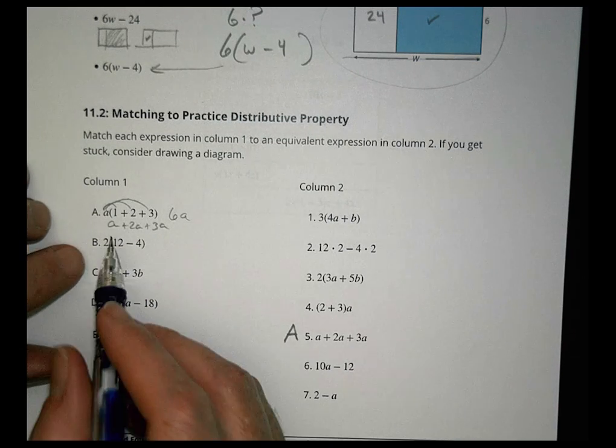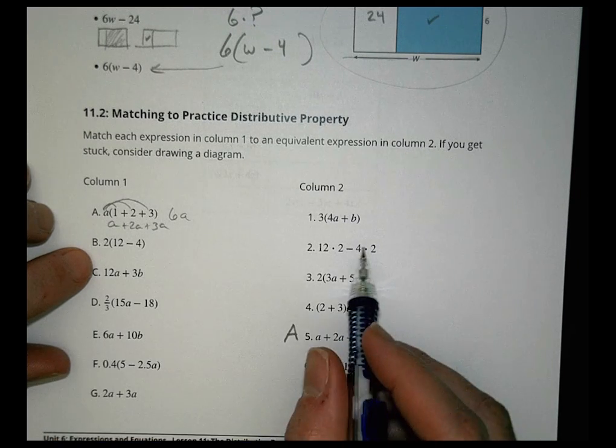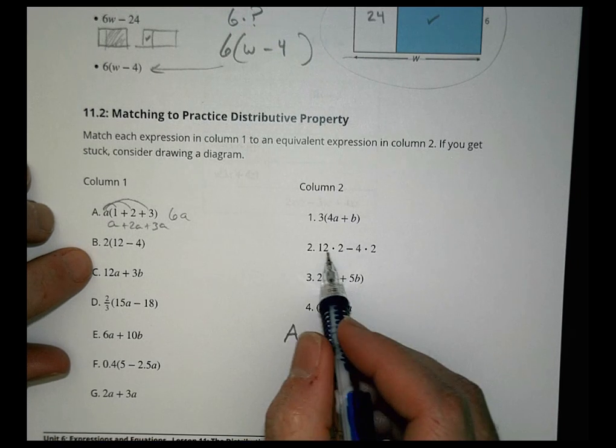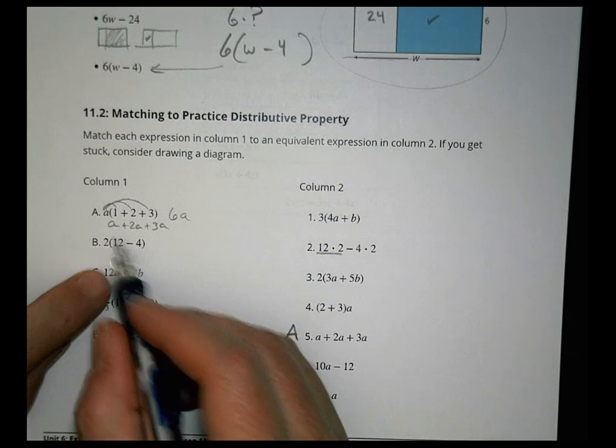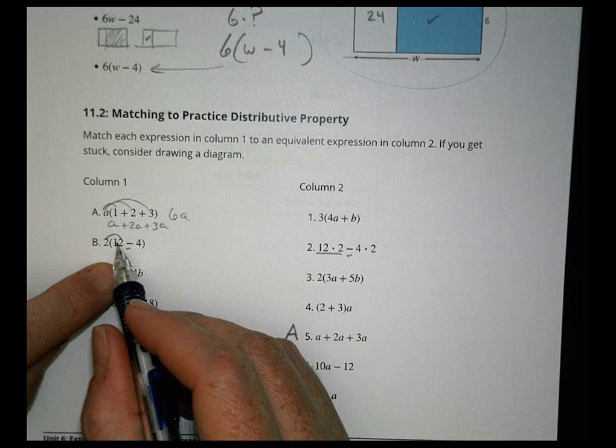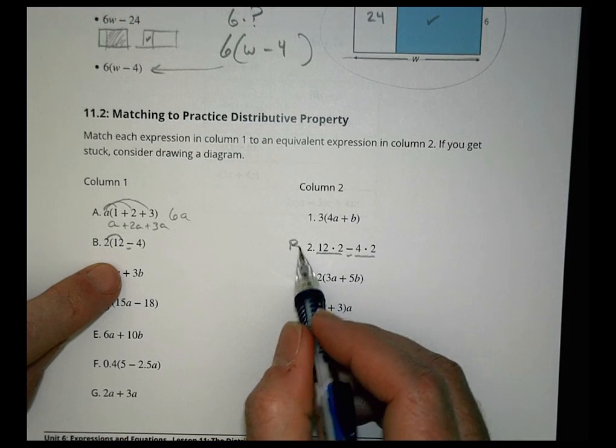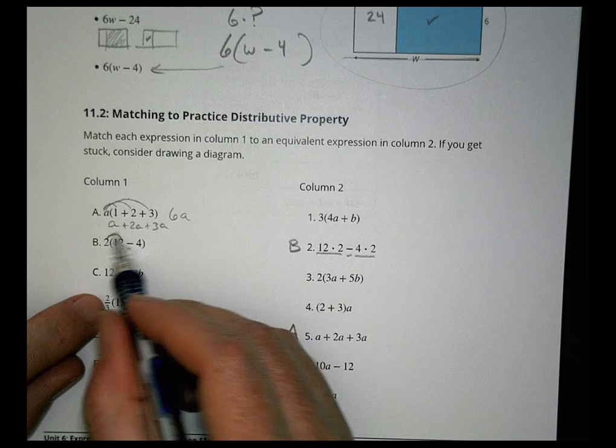Next one, (2+4)(12), 2 times 12 minus 4. I'm looking for some 12s here. Here's 12 times 2, so that would be distributing there, and we would say minus. And then 2 times 4 is right there. So that one works nicely.